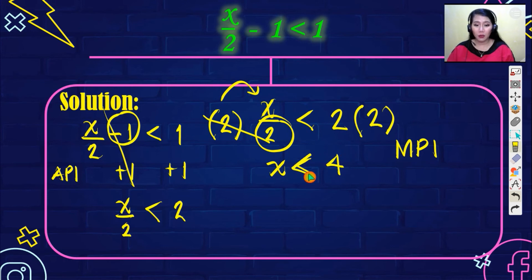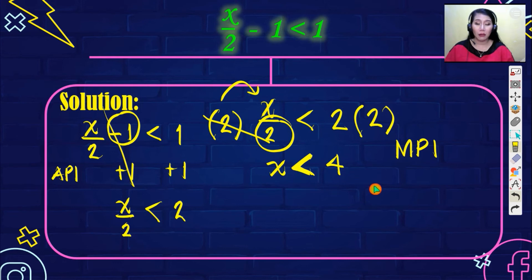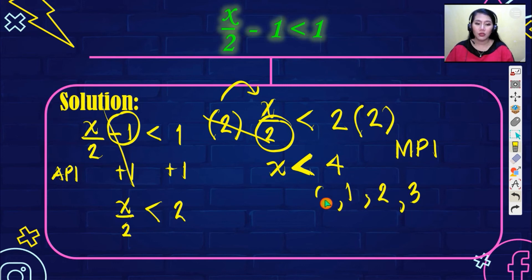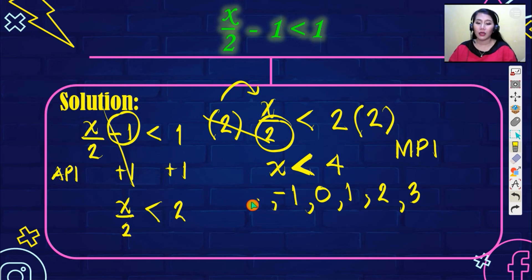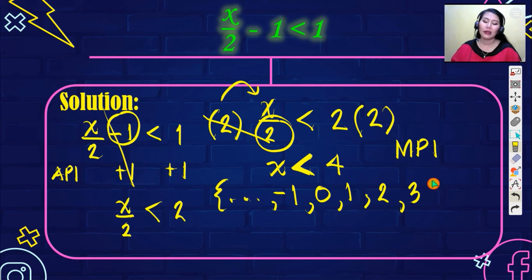So the numbers less than 4 — the symbol points to the left. The solution set going left: 3, 2, 1, 0, negative 1, and so on with ellipses, because there are many numbers less than 4. That's your final answer.